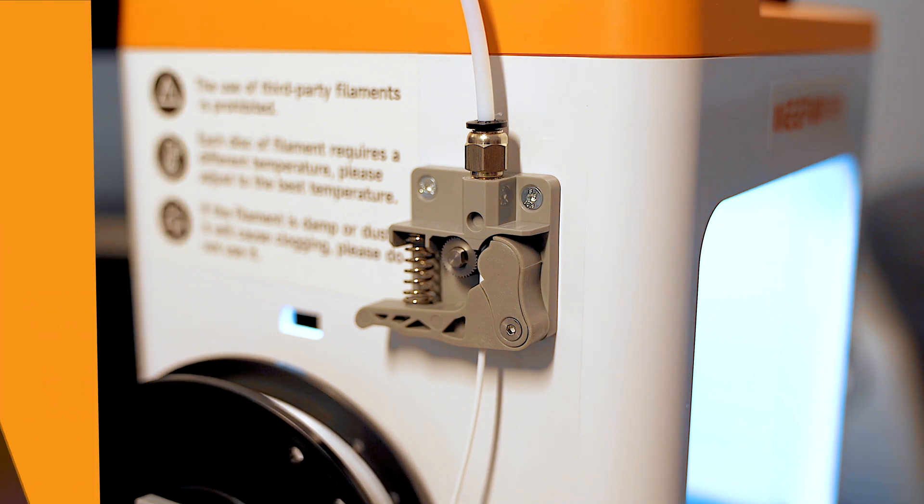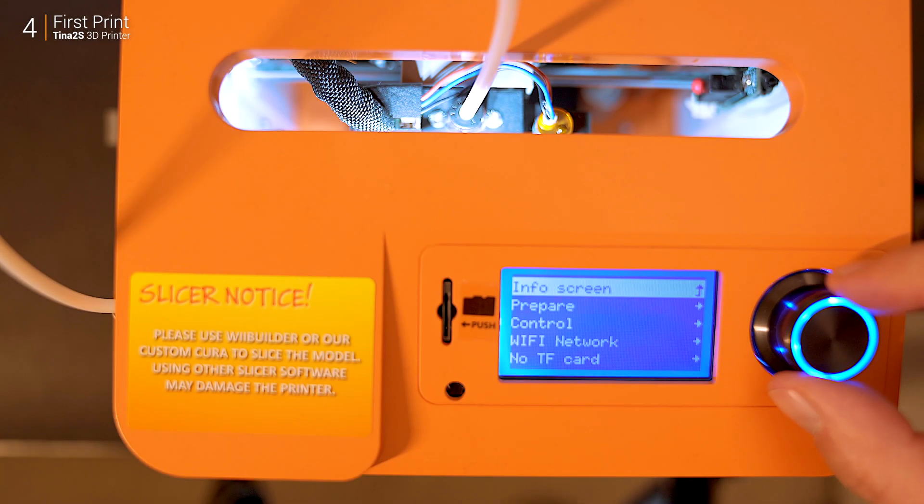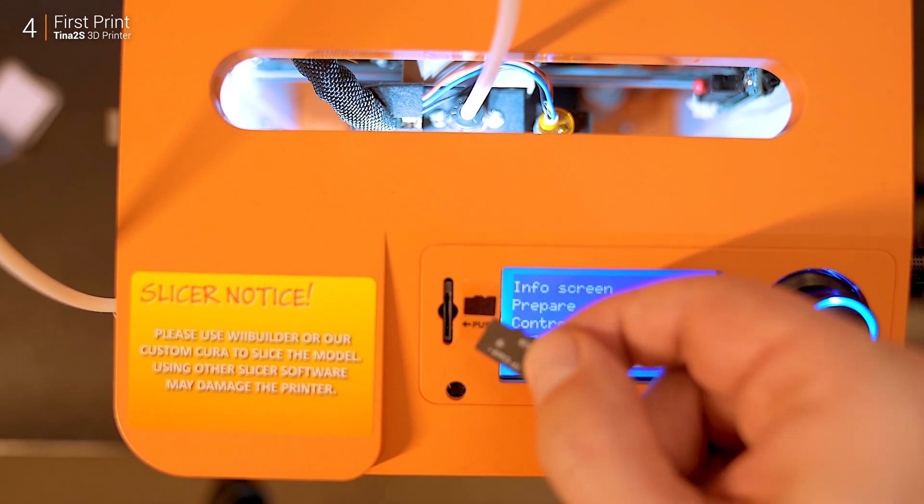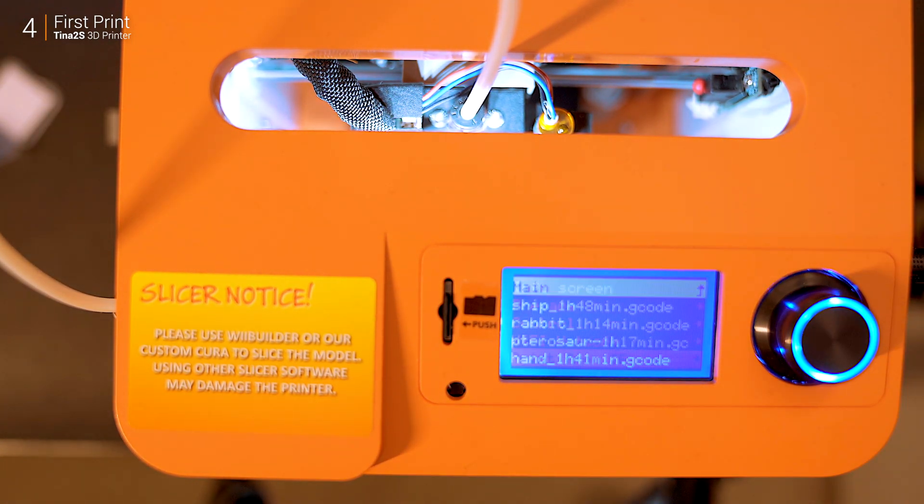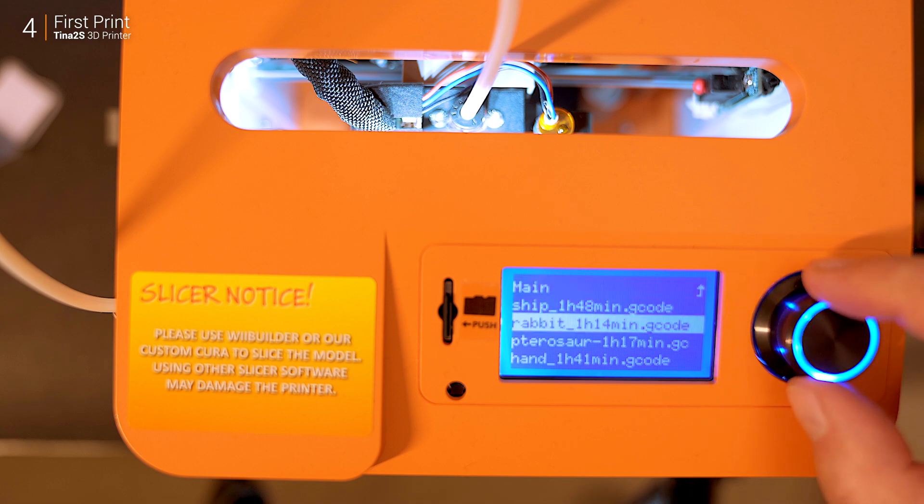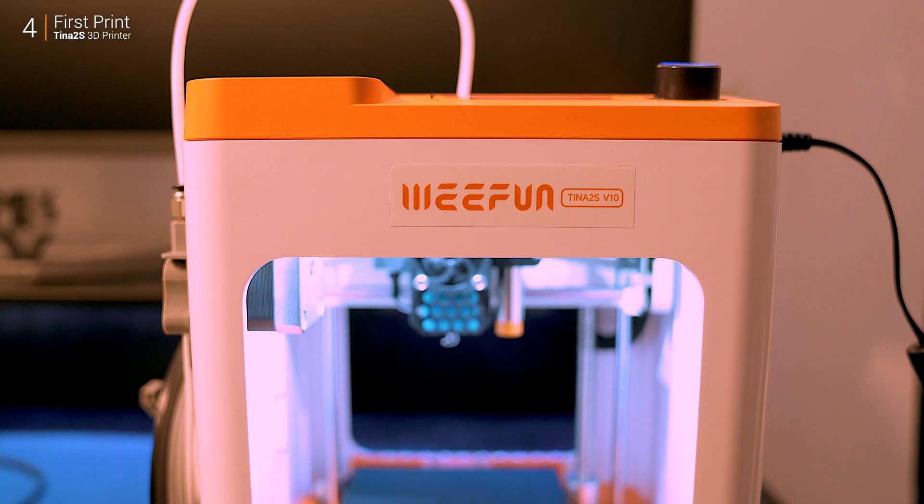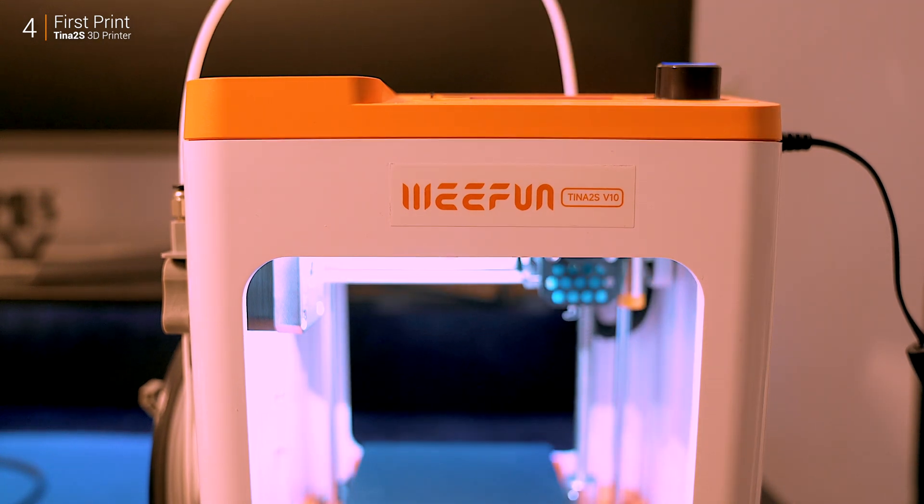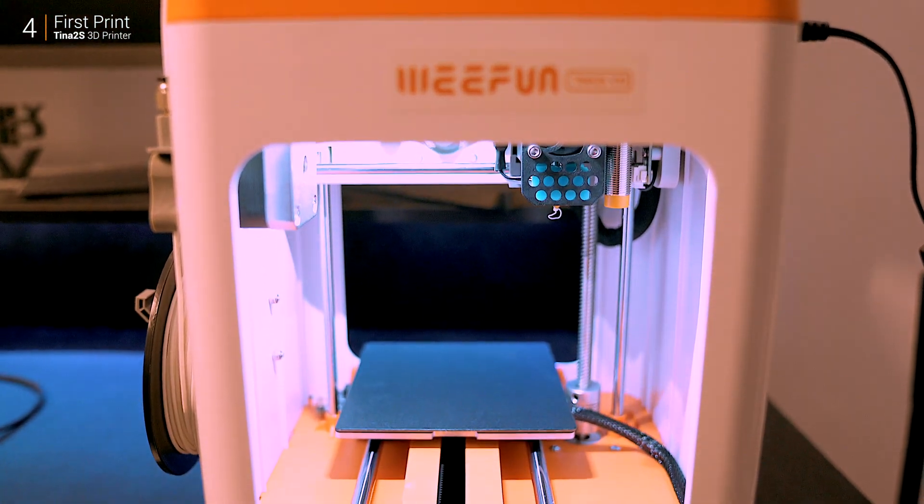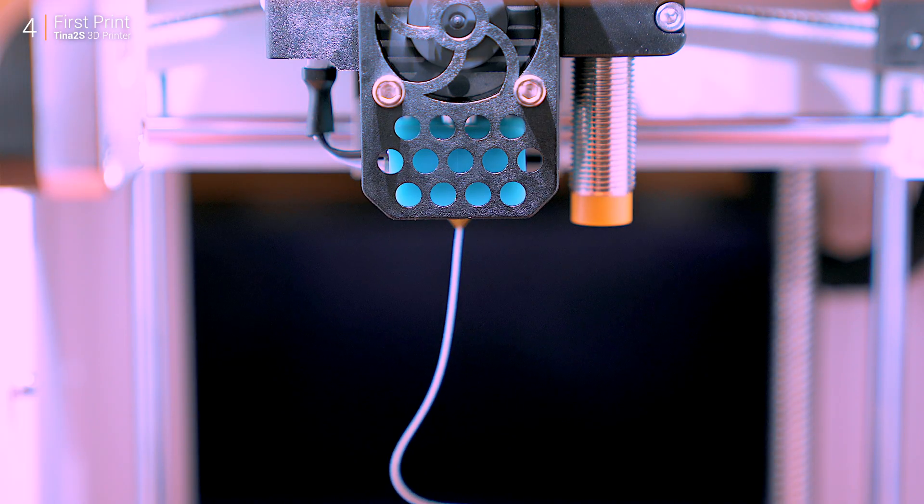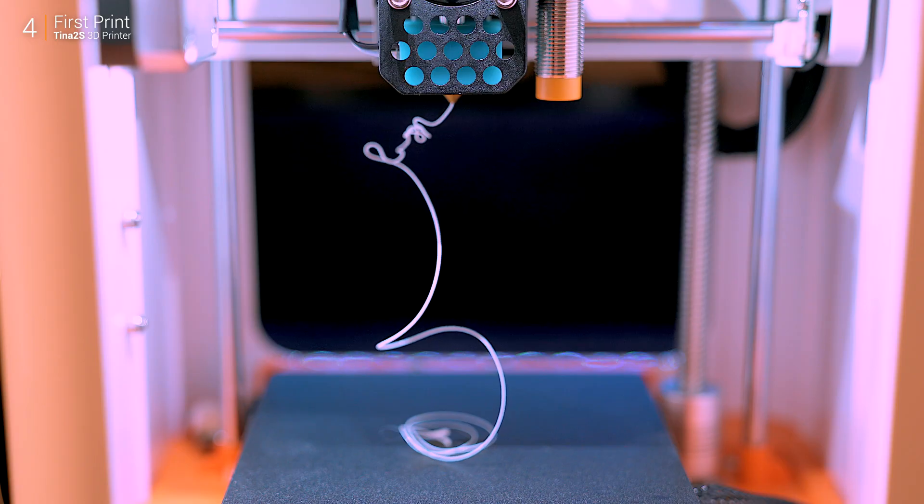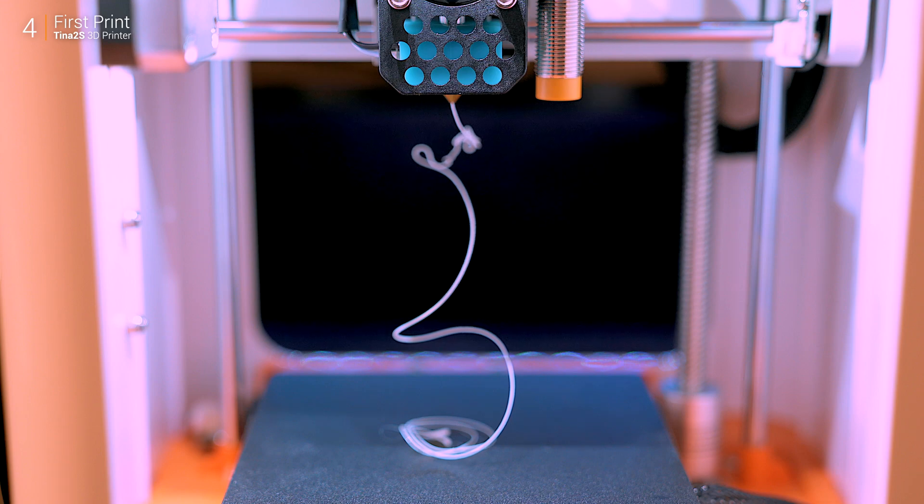The easiest way to get started is by using the included micro SD card preloaded with test models. I decided to go with the rabbit, a 1 hour and 14 minute print. Insert the card, select the model, and the printer auto-homes the bed and extruder—no manual adjustments required. Before the print starts, you might notice a bit of filament oozing out of the nozzle. Don't panic, just carefully remove it, and yes, it's hot, so be cautious.